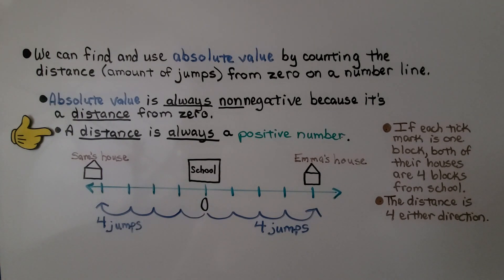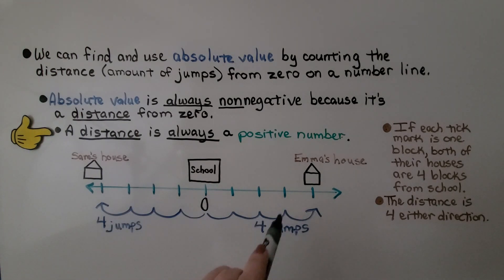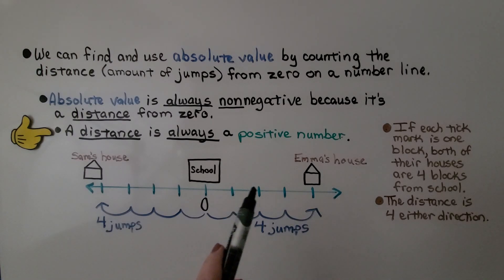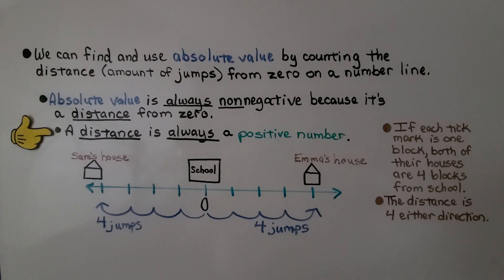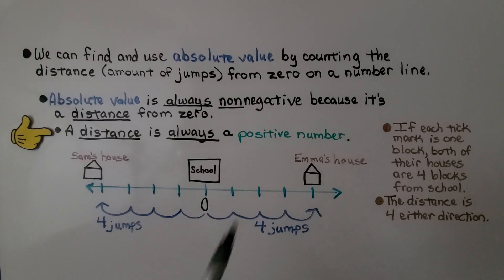The distance is four in either direction — one, two, three, four jumps from school on each side. They both live a distance of four blocks from school. It doesn't matter if it falls on the negative or positive side of a number line, because a distance is always a positive number.